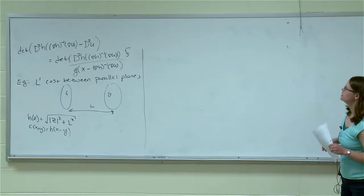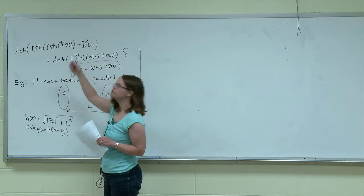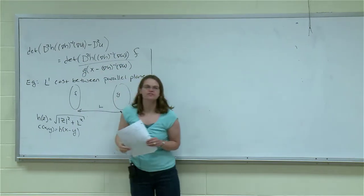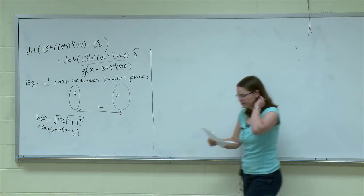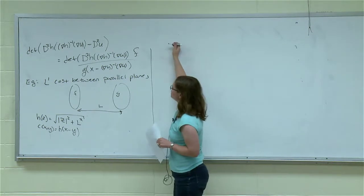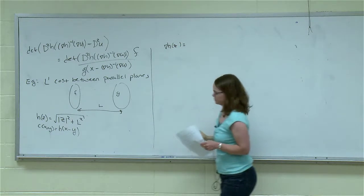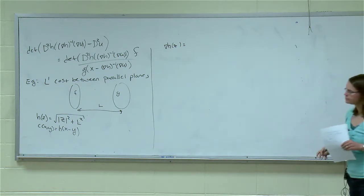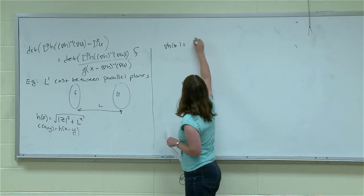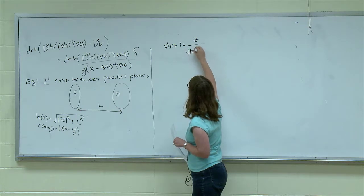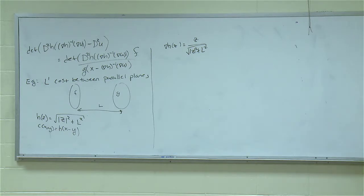Now what do I need to know? I need to know some gradients of h. I need to know how to invert the gradient of h, and I need to know the Hessian of h, and I need to know what happens to the Hessian of h when I plug in this expression. So let's compute some of these. So gradient of h — there's no real trick. So that's something that we'll need. I need to be able to invert this thing.